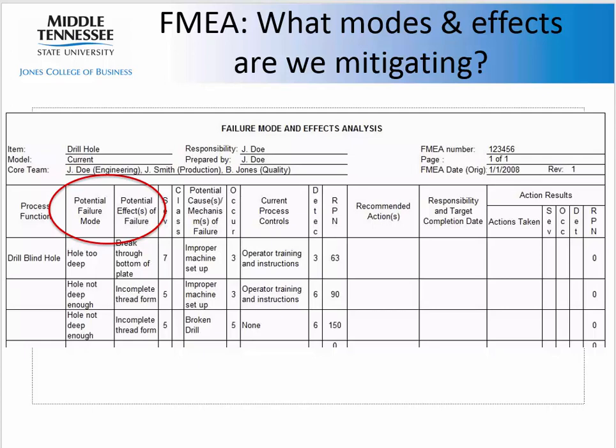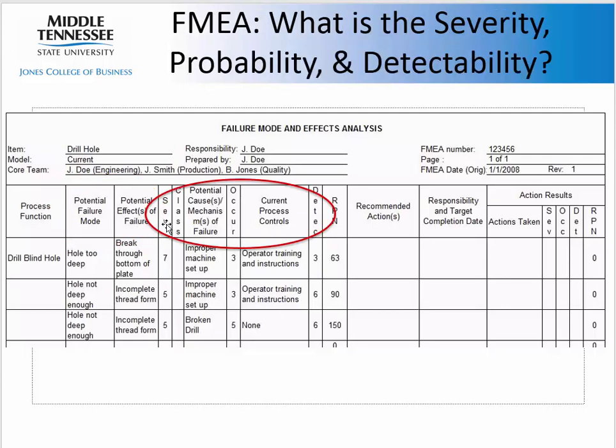Along with the failure modes, we assess how bad the failure effect is by looking at severity, ranked on a 1 to 10 scale where 10 is the worst. That's going to depend on the application — a 10 could be killing somebody, causing bodily harm, or putting the company in danger of bankruptcy. But it could be something far less than that. It's user defined.